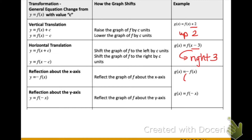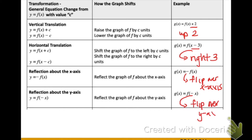The other type of transformations you learned about were reflections over the x-axis and the y-axis. When we have a negative outside of our function, this is going to be a reflection over the x-axis — you can also think of this as a flip. Similarly, if the negative is found inside the parentheses or inside the function, this will be a flip over the y-axis. The position of that negative will make all the difference when talking about reflections.